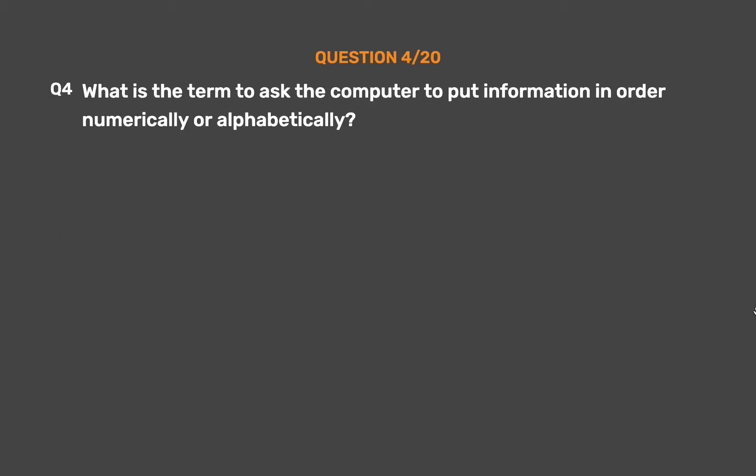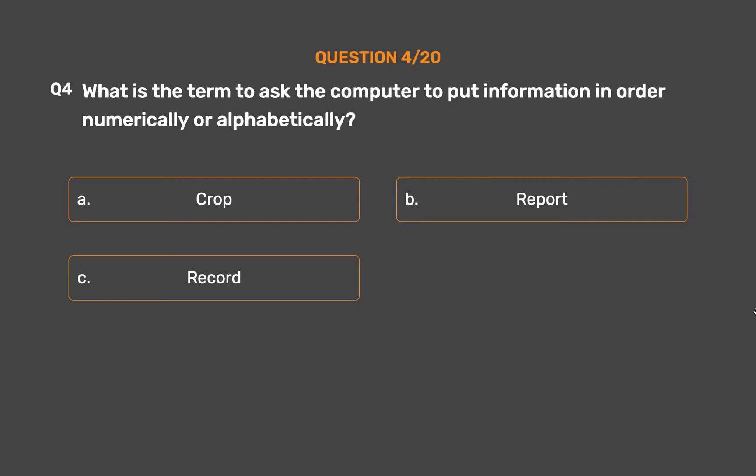Question number 4. What is the term to ask the computer to put information in order numerically or alphabetically? Option A: Crop. Option B: Report. Option C: Record. Option D: Sort.